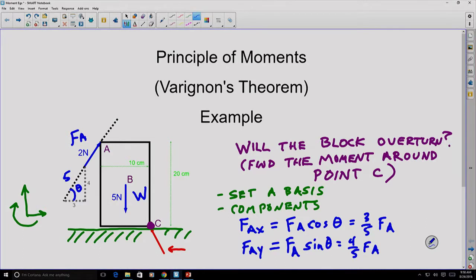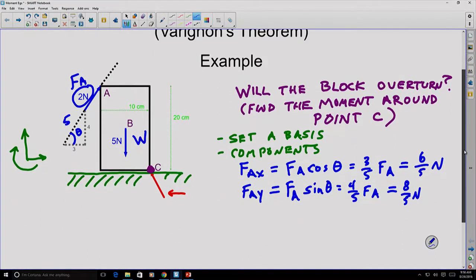And if we wanted to now, we can substitute the two newtons in for F_A to figure out the values for each of these. So our component in the X direction is going to be six-fifths of a newton, and our component in the Y direction is going to be eight-fifths of a newton. So there are our components for our force in that direction.